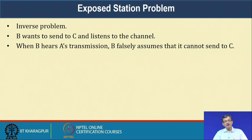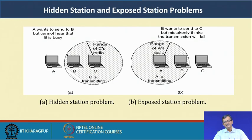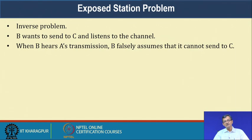The exposed station problem is the inverse: B wants to send to C, listens to the channel, and hears A's transmission. B falsely assumes it cannot transmit to C, even though B's transmission to C would not interfere with A. Because B is in A's radio range, it mistakenly thinks its transmission will fail. This is the exposed station problem — B is unnecessarily prevented from communicating.